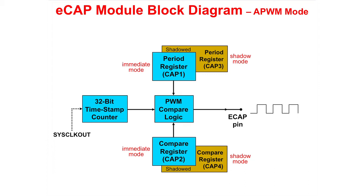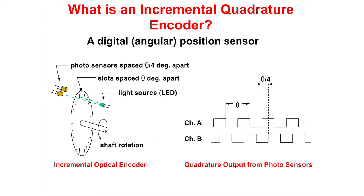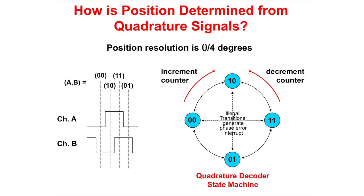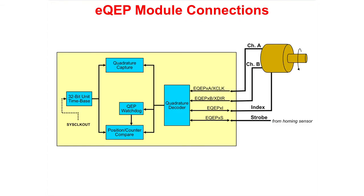If the capture module is not used, it can be configured as an asynchronous PWM module. The QEP circuit decodes and counts the quadrature encoded input pulses. This circuit can be used to interface with an optical encoder to get position and speed information from a rotating machine. Using a quadrature decoder state machine, we can determine if the counter is incrementing or decrementing, and therefore know if the disk is moving clockwise or counterclockwise. In addition to channels A and B being used for rotation directional information, the index can be used to determine rotational speed and the strobe can be used for position from a homing signal.